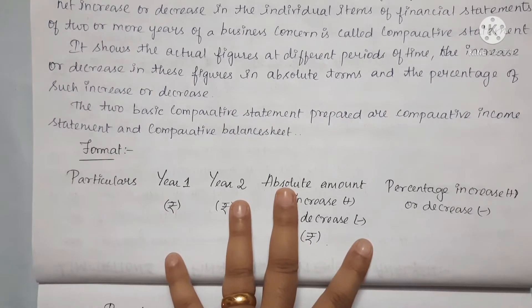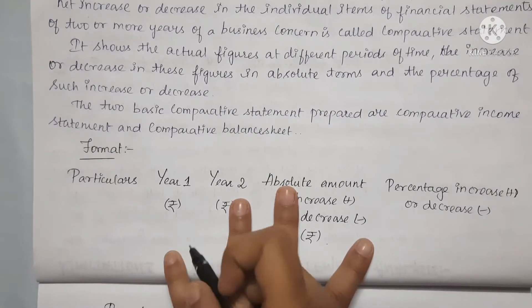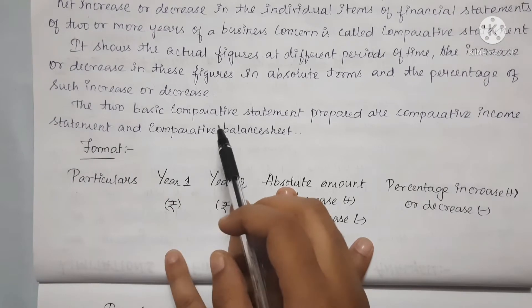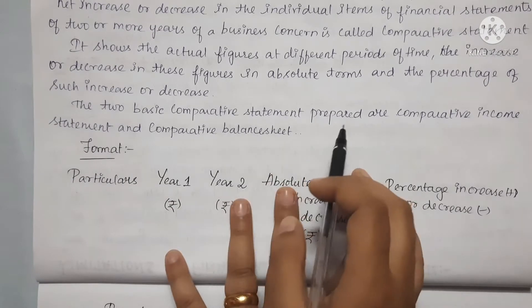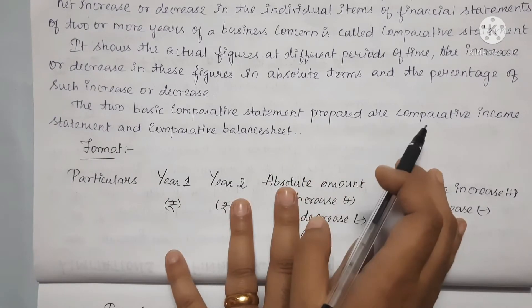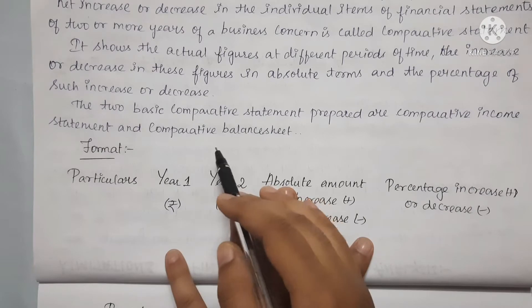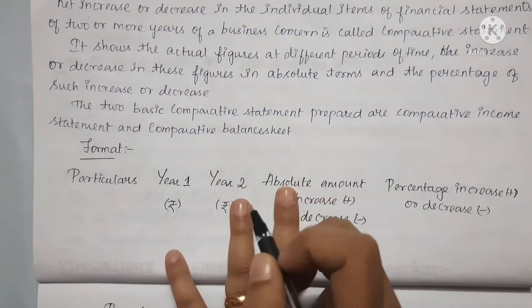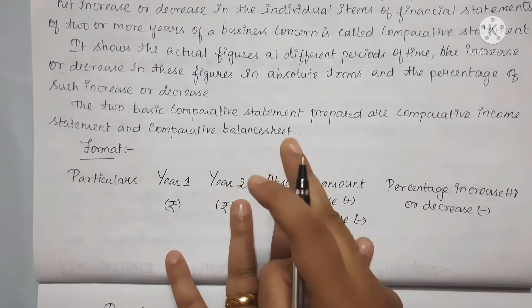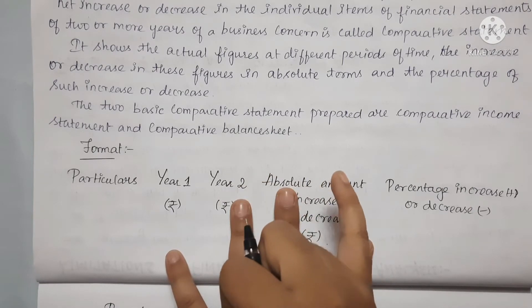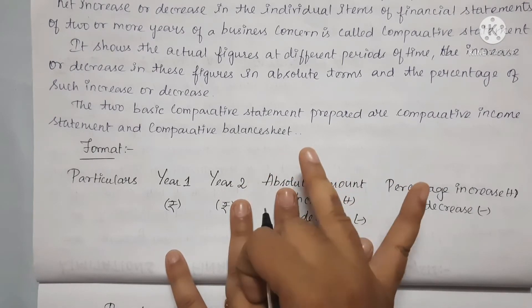The two basic comparative statements prepared are the comparative income statement and the comparative balance sheet. So what we work with are these two basic statements: the income statement and the balance sheet.